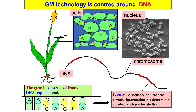Within each and every organism, we have cells. Within the cells we have the nucleus, and within the nucleus we have chromosomes. Within the chromosomes we have segments, and those segments of chromosomes define the various traits. You can define a gene as a portion of your DNA that defines a trait.